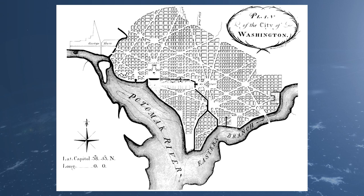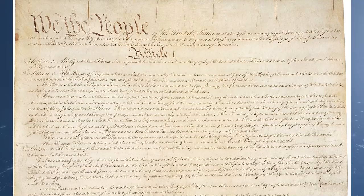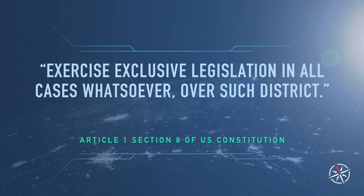Article 1 deals with the powers of Congress, and in Clause 17, Congress is given power to quote, exercise exclusive legislation in all cases whatsoever over such district, which they add is not to exceed 10 square miles, or 16 kilometers.